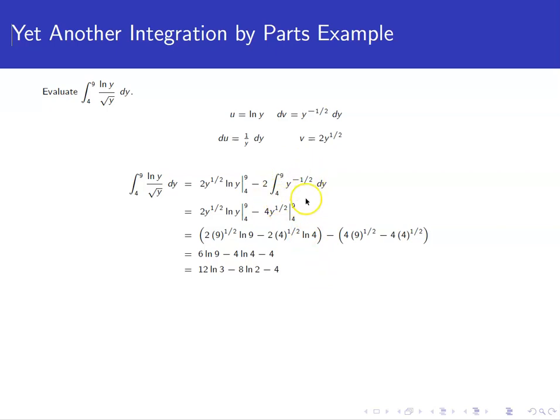We've already anti-differentiated that once before. Its antiderivative is 2y to the 1 half. There's already a 2 out in front here. So we get 4y to the 1 half as an antiderivative here. And we need to evaluate that from 4 to 9.